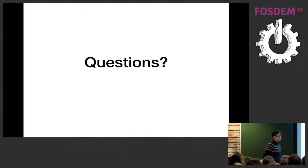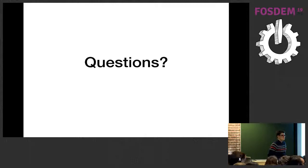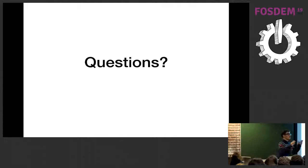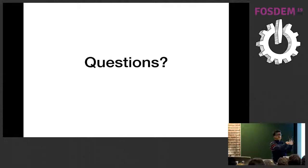A question was raised about whether Coming mines the Java source code or the bytecode. We mine the source code. We take a version from a commit, take the source code, and mine the changes between the version of the commit and the previous one — all at the source code level.